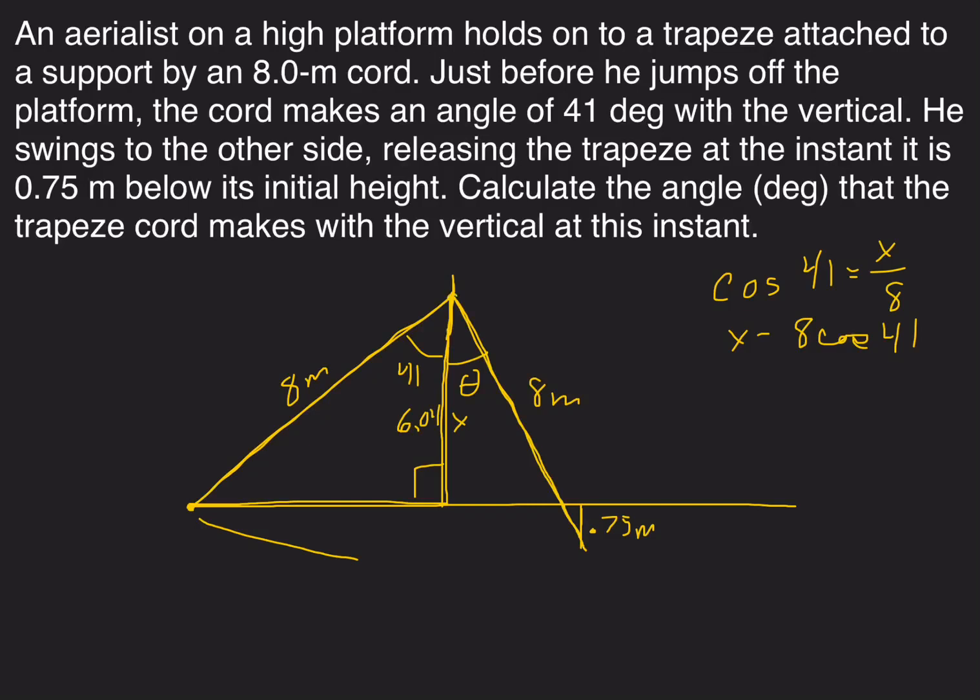This length from here down to here is 6.04. Now let's think about another triangle. We know it's 0.75 right down here, so let's take that 0.75 and draw it right here on the end of that line also. I'm going to draw a horizontal line over to there and make this new triangle.